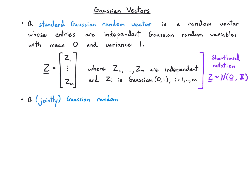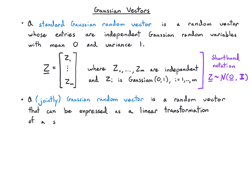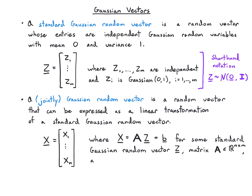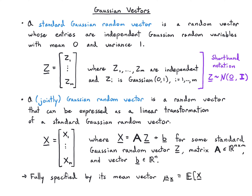A jointly Gaussian random vector — we usually just say Gaussian random vector — is a random vector that can be expressed as a linear transformation of a standard Gaussian random vector. This is the same definition we saw before for jointly Gaussian random variables: you take linear functions of standard ones. So the vector x can be written as AZ plus b, where Z is a standard Gaussian random vector, A is a matrix of the correct size, and b is a vector of the correct size. Usually we specify the mean vector mu_x and covariance matrix Sigma_x as the two parameters.